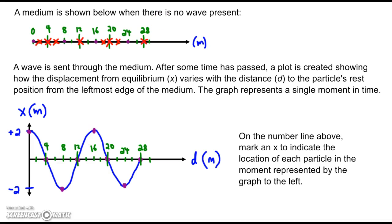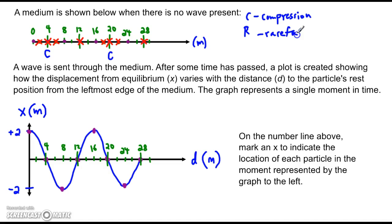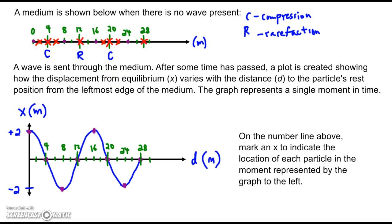Now I want to mark with a C the center of compressions. Compressions are where the particles are all scrunched up. Here we have three scrunched-up particles — the center is right here. Here's another compression of three scrunched-up particles; there's a C for the center of that compression. With an R, I'd like to mark the center of a rarefaction — a rarefaction is an expansion. This is a really expanded part right there, so here is the center of that expanded area. This is another expanded area here as well.